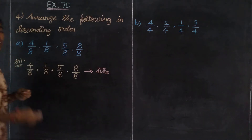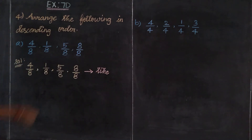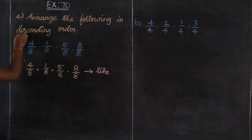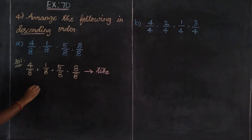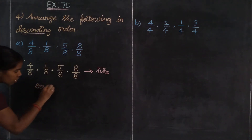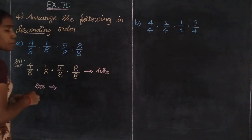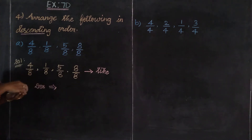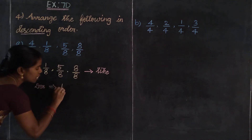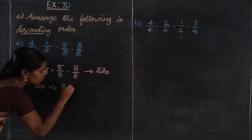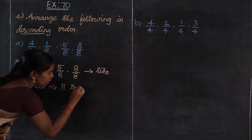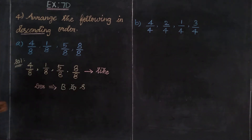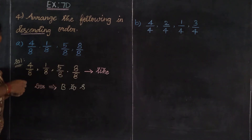So in this like fraction, the arrangement is the same. Find out this descending order. In descending order, biggest value to smallest value — how to arrange? First, we consider the denominator value, which is always equal. So next we consider the numerator.